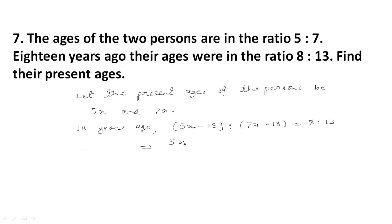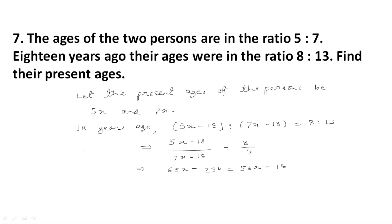This implies 5x minus 18 upon 7x minus 18 is equal to 8 upon 13. Here we will do cross multiplication. 5x multiplied by 13 is equal to 65x. When we multiply 18 and 13 we get 234, and 7x multiplied by 8 gives 56x, and 18 multiplied by 8 gives 144.